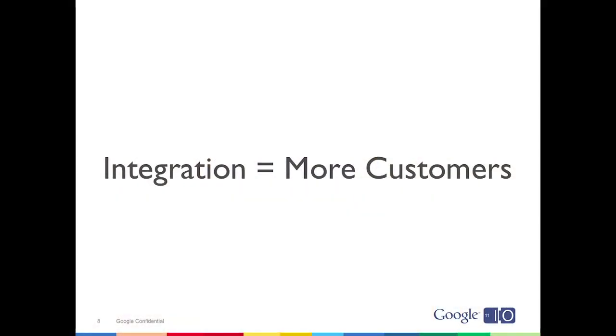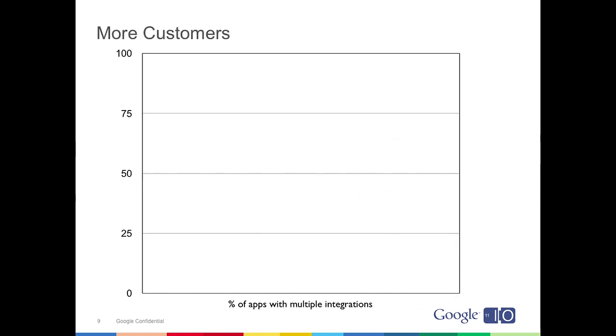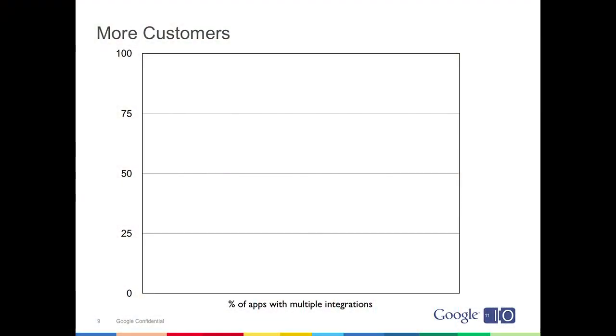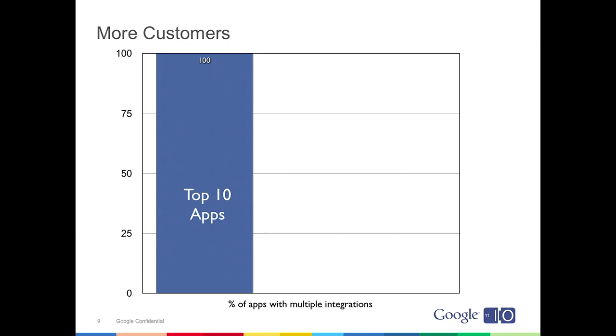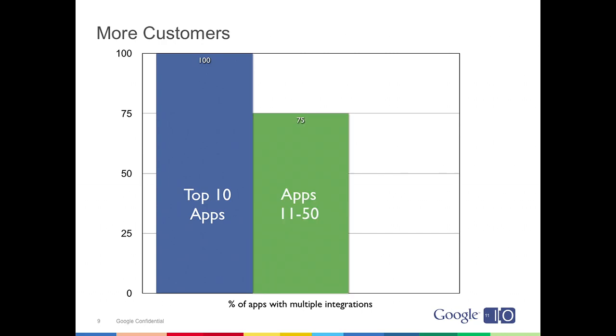For you as an application developer, the reason this is so important is simple: integration gets you more customers. A few weeks ago, I wanted to see if there was a correlation between how well integrated an application was and how well it performed in the Marketplace. So I looked at the top 100 applications, measured by their weekly installs. What I found is that the top 10 applications all went well beyond the minimum requirements — in addition to single sign-on, they all integrated Google Contacts, Calendar, Docs, and so on. When you look out to the top 50, the rate's still pretty good, about three out of four apps. But when you go out to the top 100, that rate drops down to 66%.